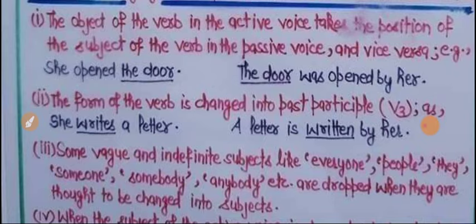Rule number 3: Some vague and indefinite subjects like Everyone, People, They, Someone, Somebody, Anybody وغیرہ are dropped. جب ان کو subject میں بدلیں گے تو یہ drop کریں گے، اس کو ہم نہیں لائیں گے — ضرورت نہیں ہے۔